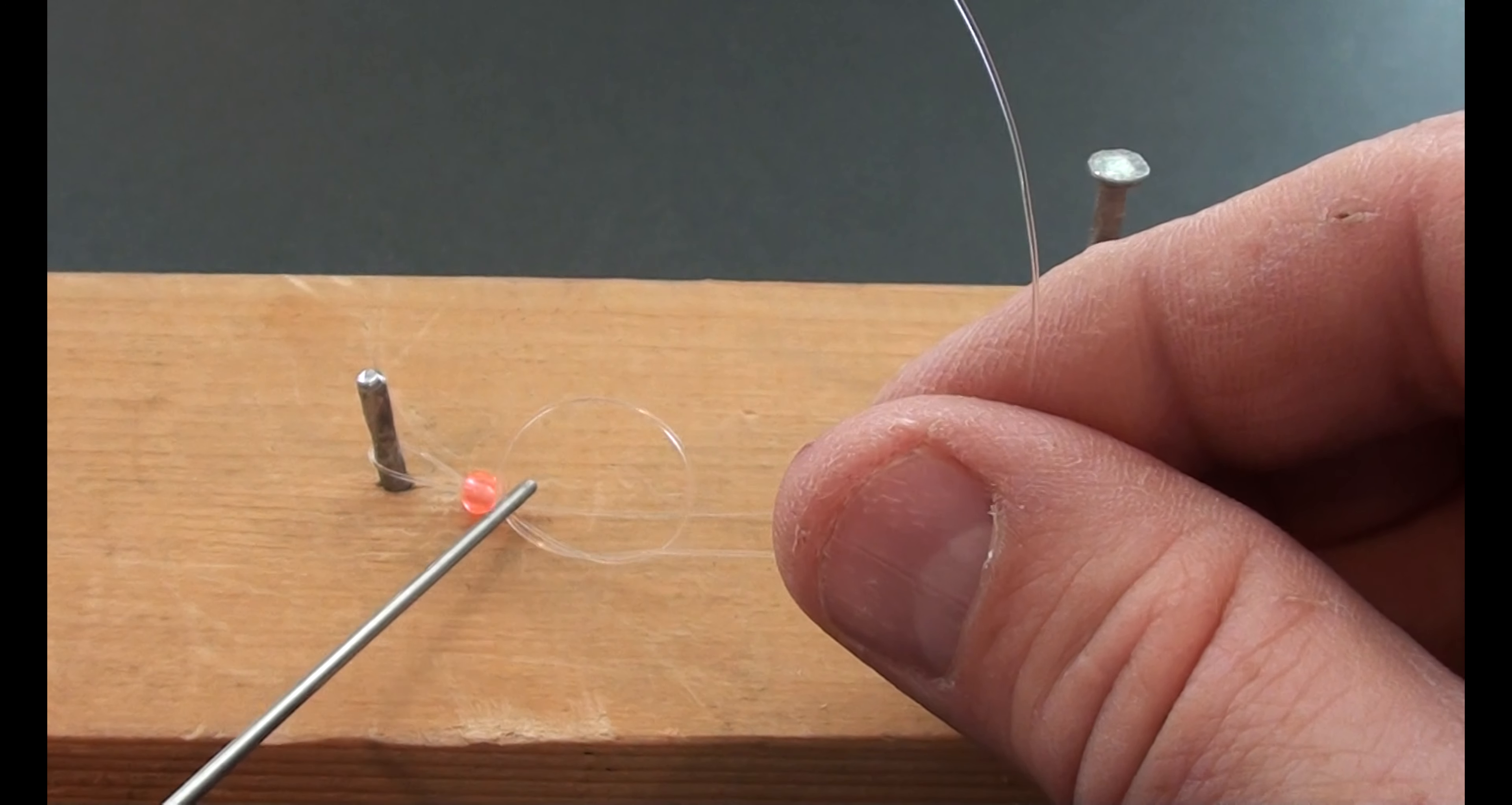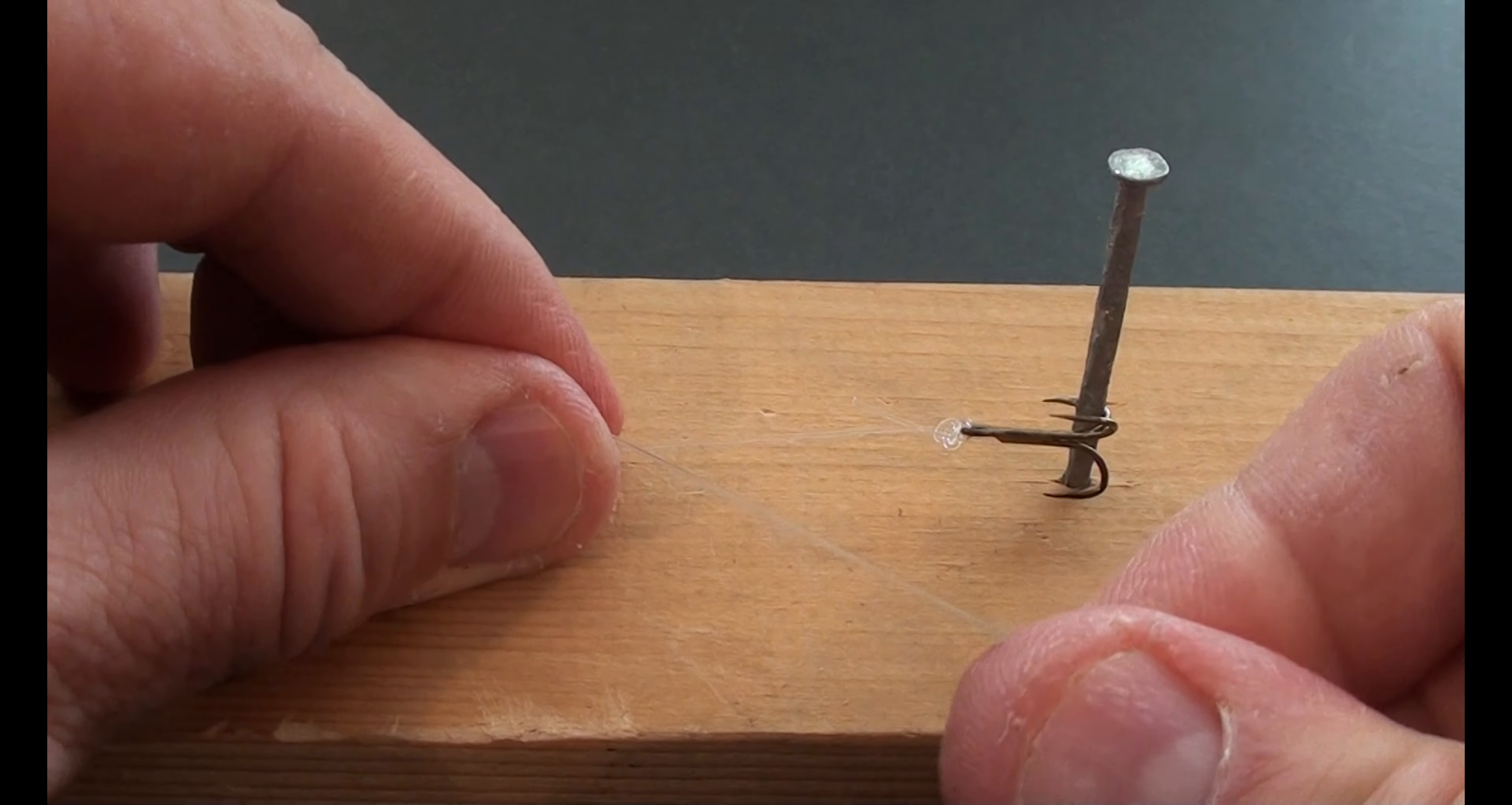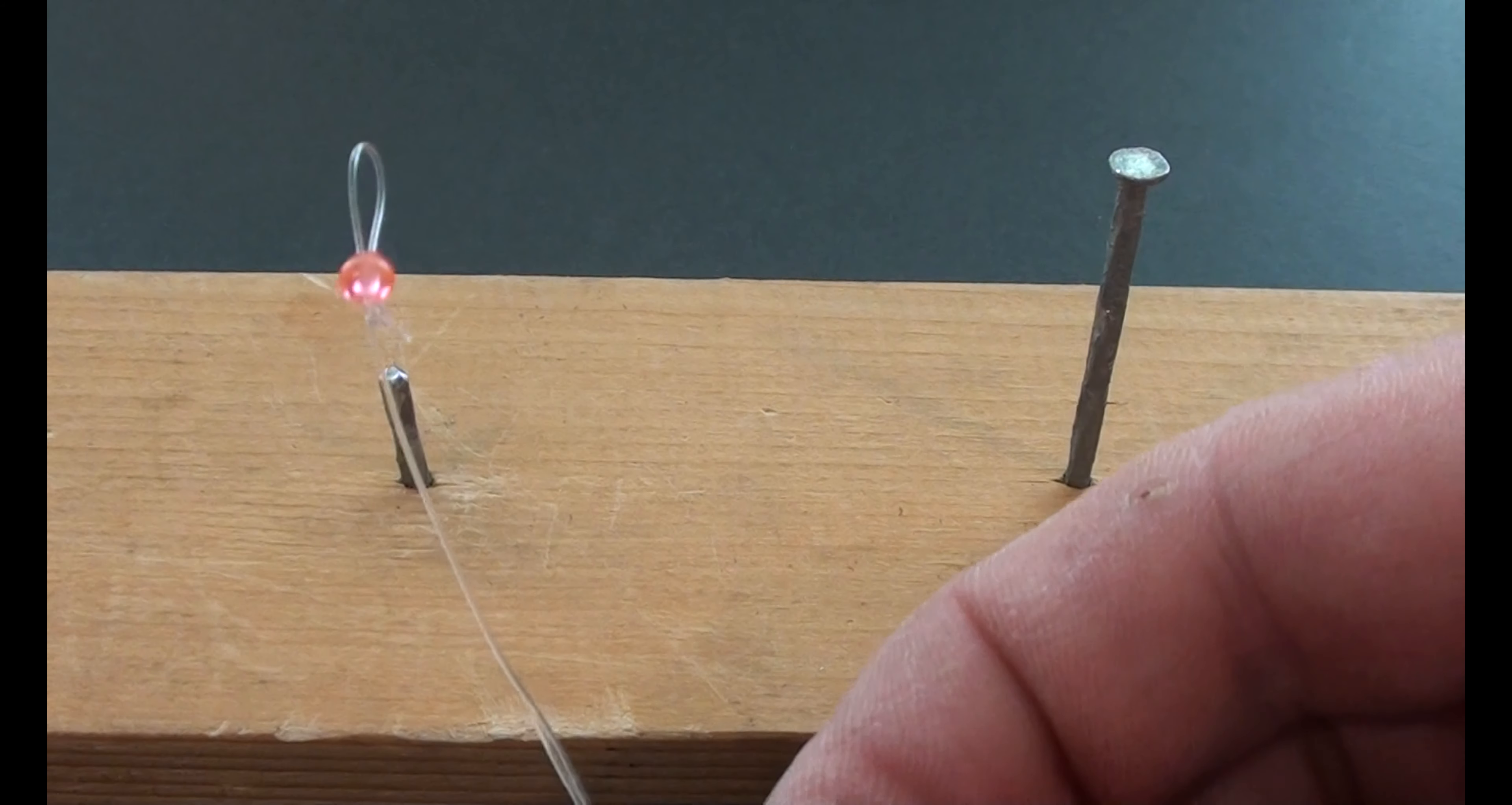Then we're going to use something like a small needle or in this case I'm using a pick from a fly tying kit. And we're going to use that to slide the overhand knot right down to the bead to cinch it down so that we have a nice small loop coming out of the bead and over that left nail. And then we just trim our tag and that's it. We've got a completed stinger hook that's ready to go.